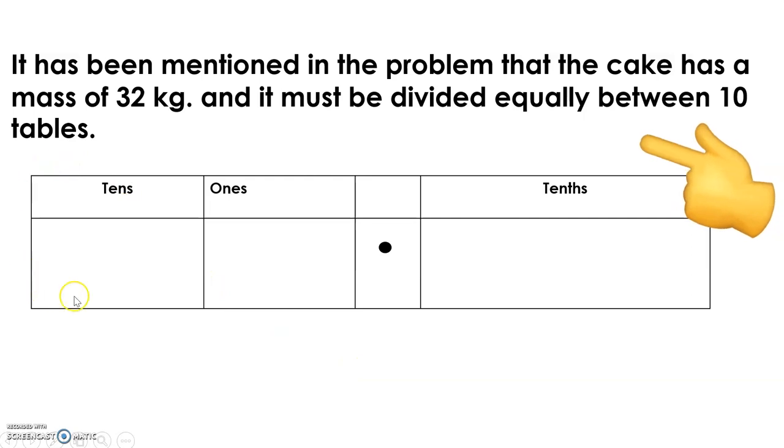Basically, we have here the place value grid, but we will have to take a look again at the problem. It has been mentioned that the cake has 32 kilograms and must be divided equally between 10 tables. We will have to look at how many tens are here and how many ones are here. There are three tens and two ones.